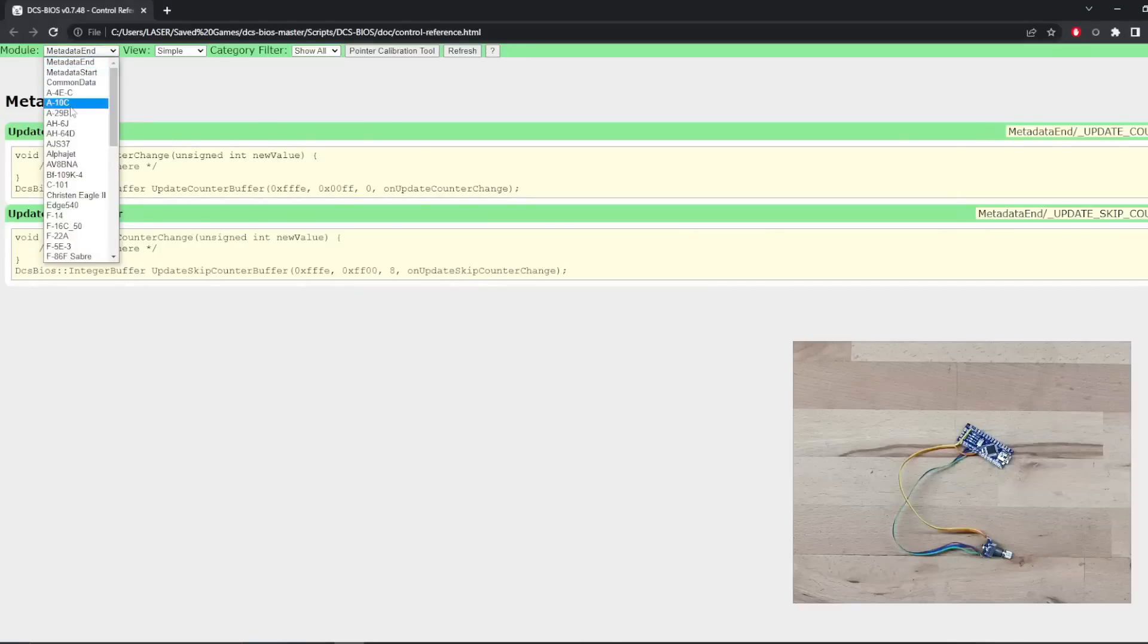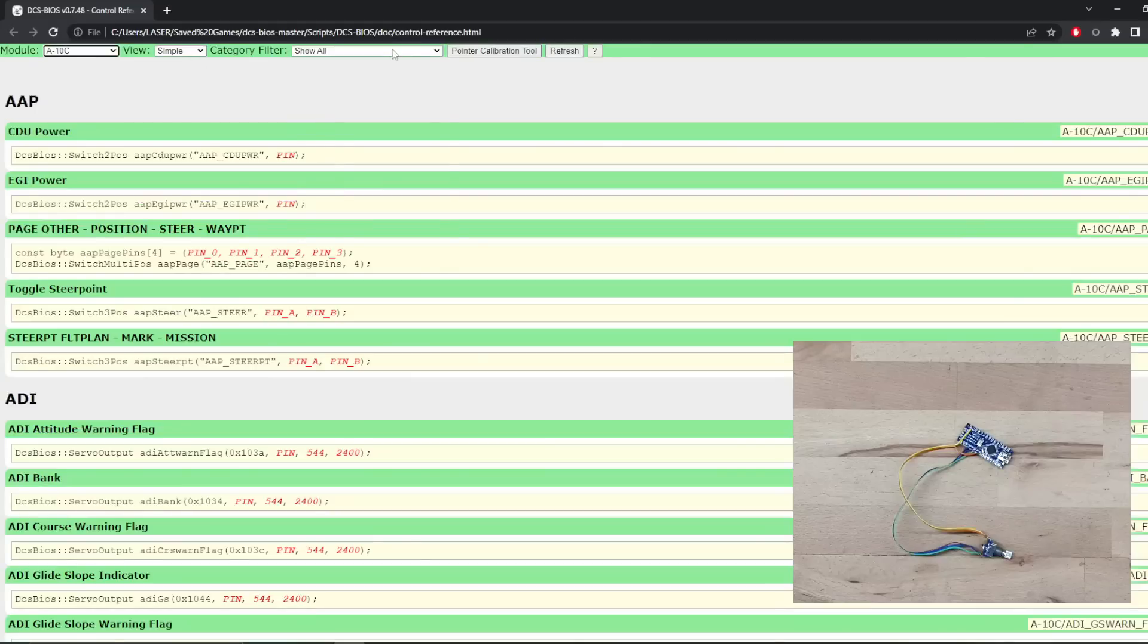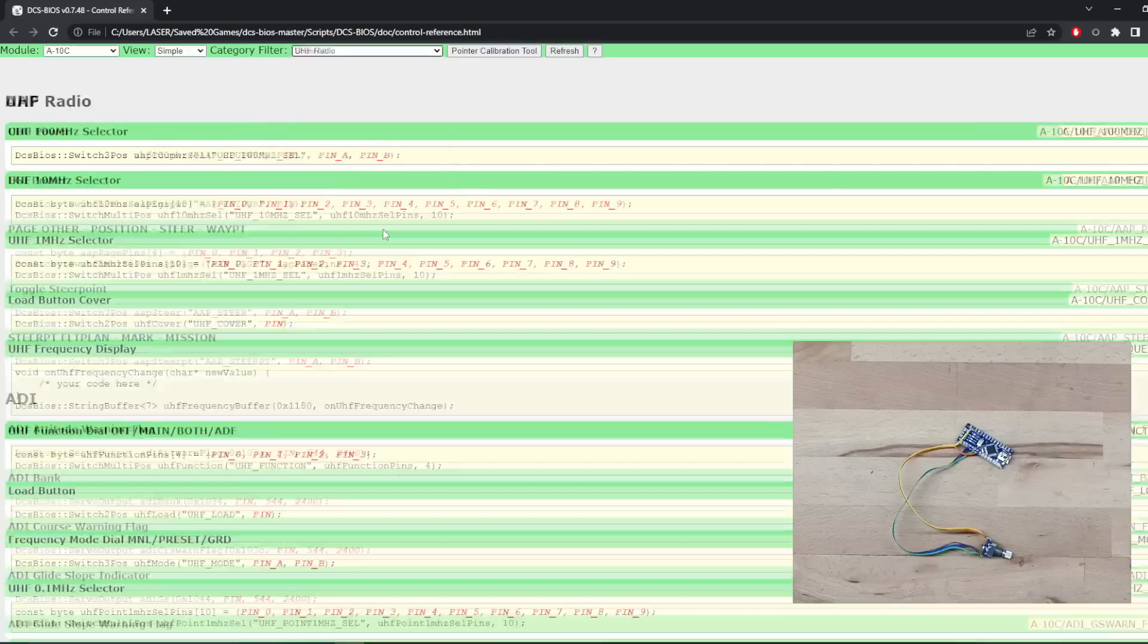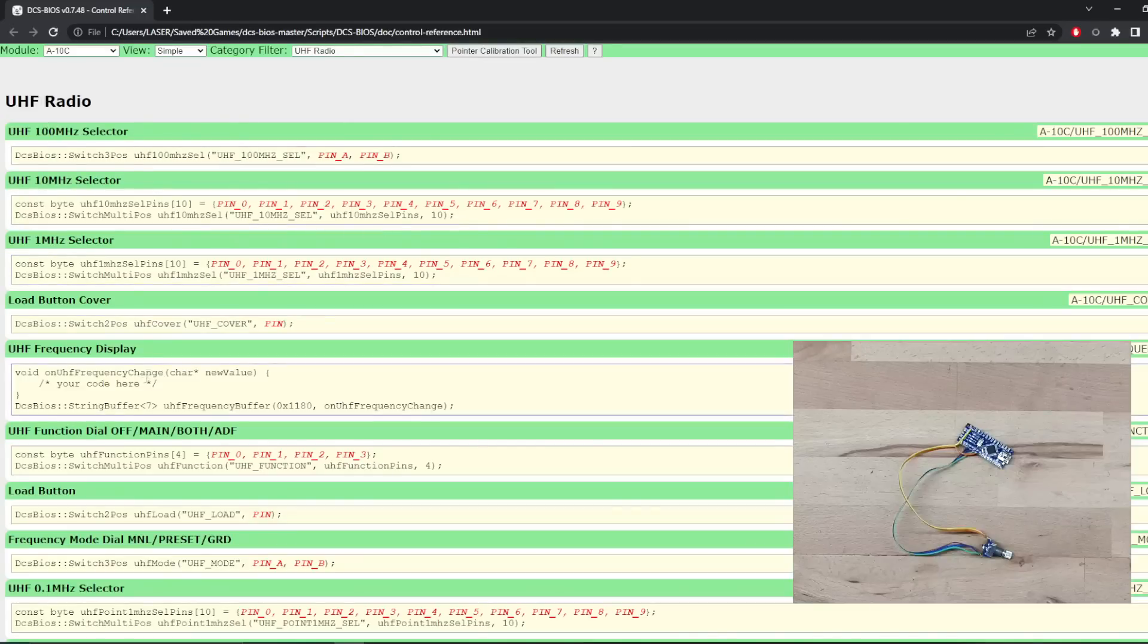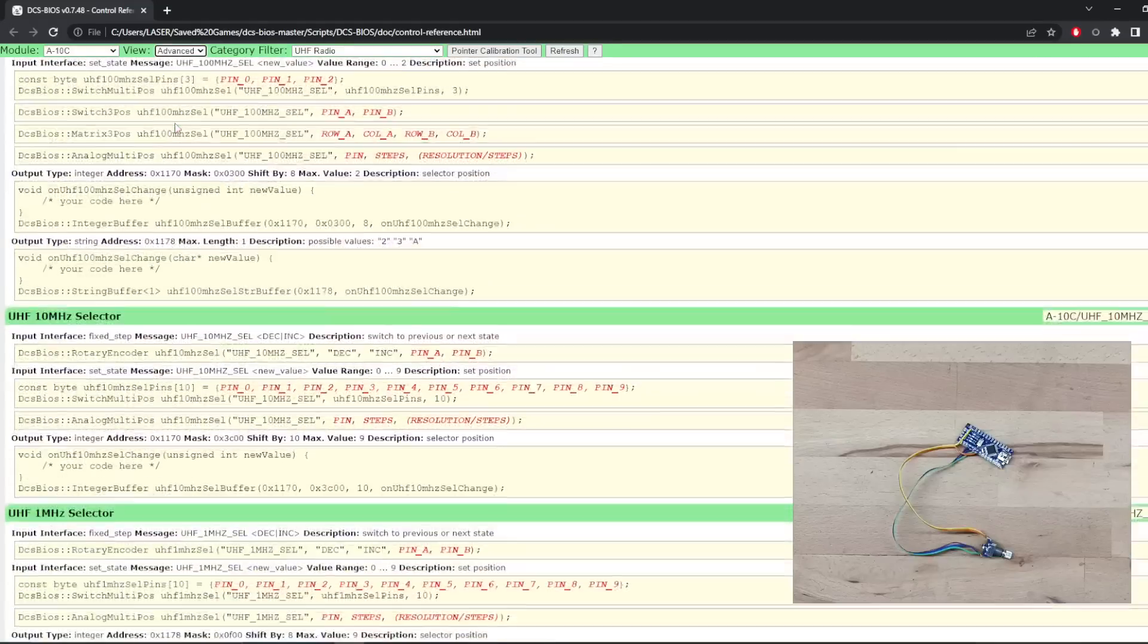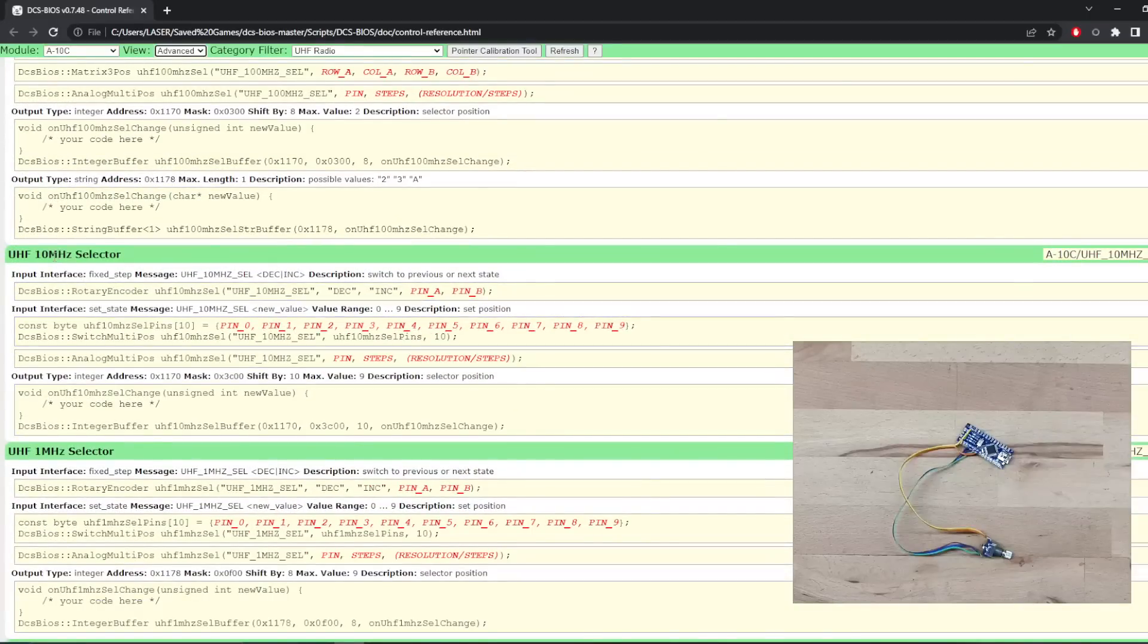Here we are back in the control reference. Let's grab the A-10C. Let's find something that needs a rotary encoder. So we might make it one of the radios, I suppose. The UHF. So you'll see a whole bunch of things that the UHF has. Let's pick one that we want to use our rotary encoder for. So this 10 MHz selector. You'll see that it defaults to a multi-position switch with 10 pins. So in the real aircraft, it's a rotary switch with 10 positions, but we don't want to use a rotary switch because they're very expensive. We want to use a very cheap rotary encoder. So all you need to do is go up here and change view from simple to advanced.